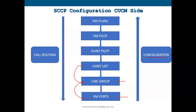After the hunt list is created, you create a hunt pilot number — because the hunt pilot number contains the hunt list. Then create the voicemail pilot number, which should be the same as the hunt pilot number. Once the voicemail pilot number is configured, create a voicemail profile that contains the voicemail pilot number. This voicemail profile is placed on the line page of the phone, which triggers the entire call routing flow.